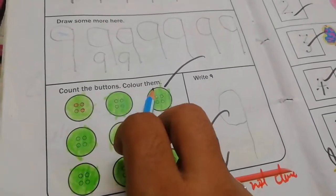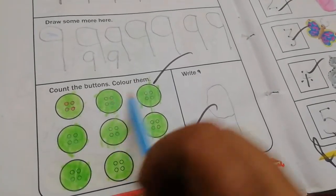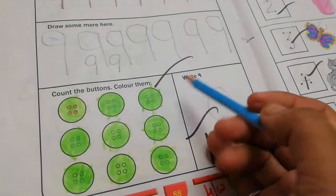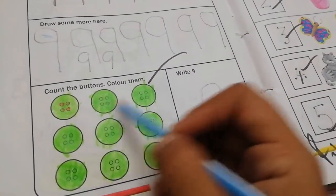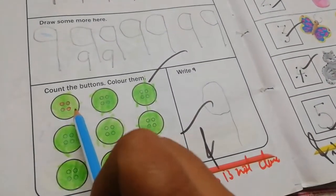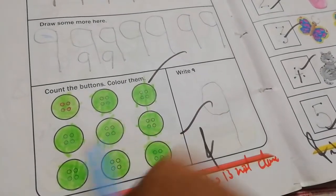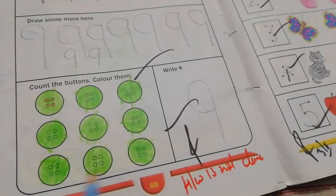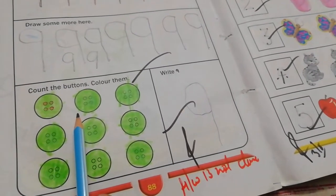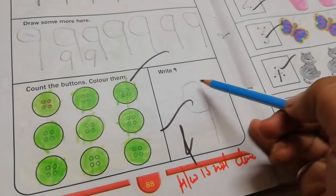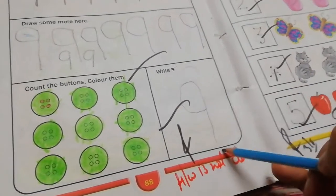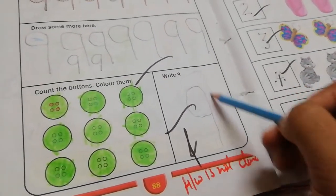Count the buttons and color them. And as you wish, you will do this single color also. 1, 2, 3, 4, 5, 6, 7, 8, 9. There are 9 buttons. You will also color different. And write number 9. You write here number 9 big. Big number 9. You will draw here.